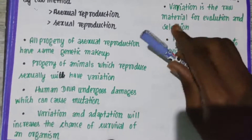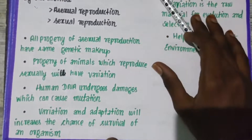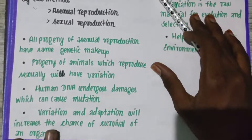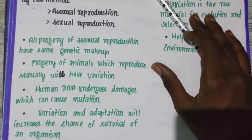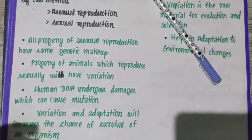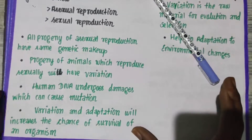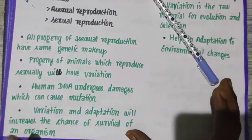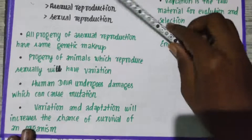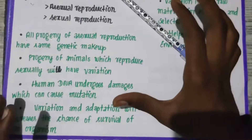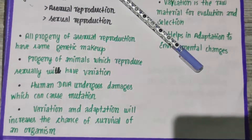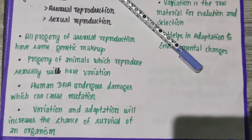Variation and adaptation increase the chance of survival of an organism. Variation refers to differences formed in the organism that have been produced due to sexual reproduction. Variation helps the organism to survive by adapting to its environment.